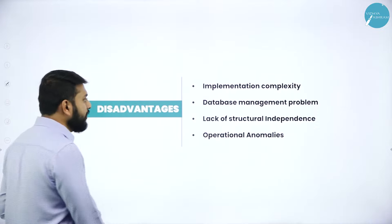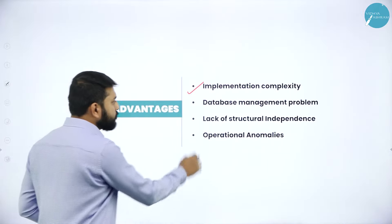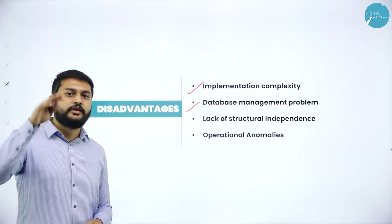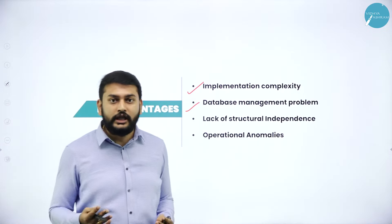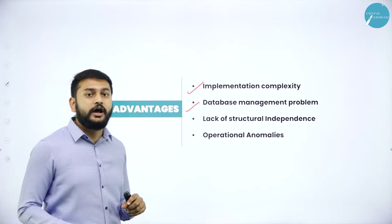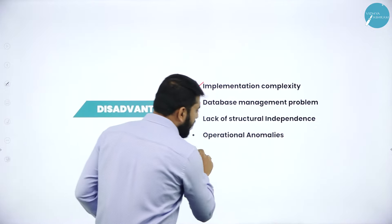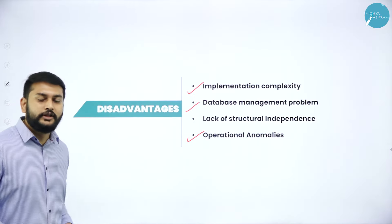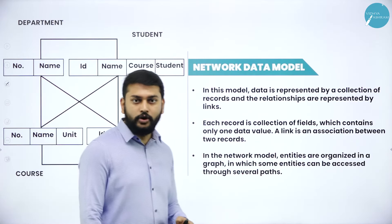One-to-many means one node has connections with multiple child nodes — for example, one lecturer can teach multiple students. When you have one-to-many relationships, the hierarchical model is very efficient. The disadvantages are: implementation is very complex, database management is a problem, there is lack of structural independence — for example, to delete the root node you have to delete all sub-nodes first — and there are operational anomalies.